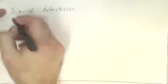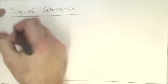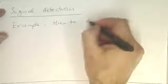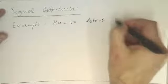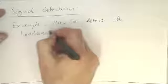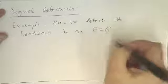So let's now talk about signal detection. So our task or our problem is, or our example, is how to detect the heartbeat in an ECG.